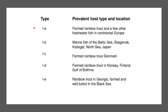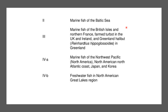Genotype 1 has five subtypes: 1A, B, C, D, and E. This diagram shows the prevalent host of the different genotypes as well as their locations. The prevalent host and location of genotypes 2, 3, 4a, and 4b are also shown respectively.